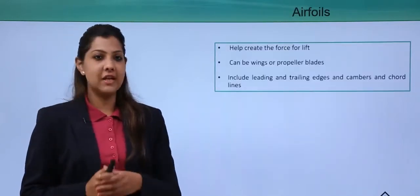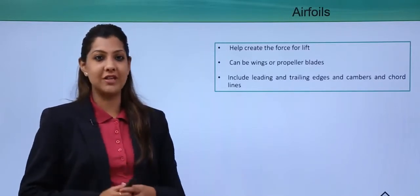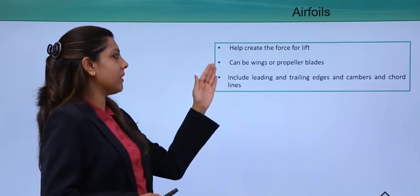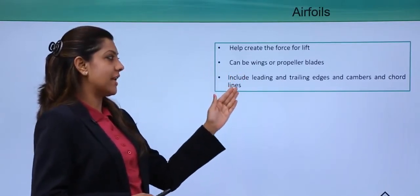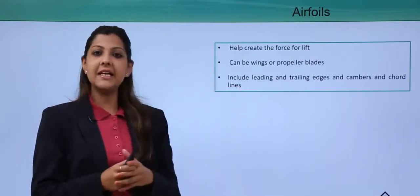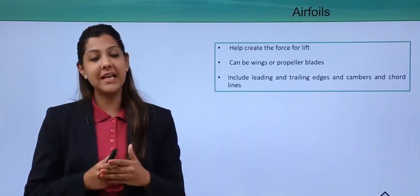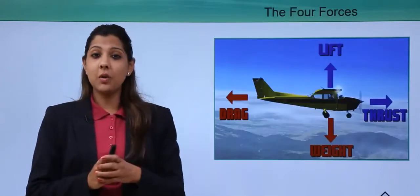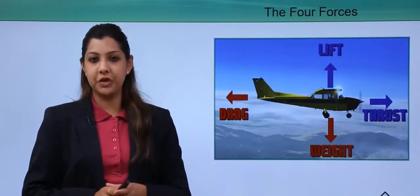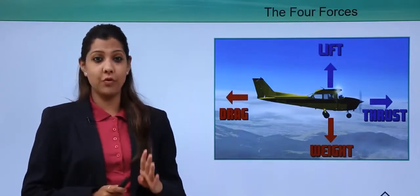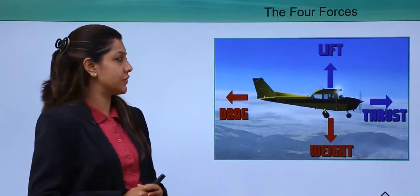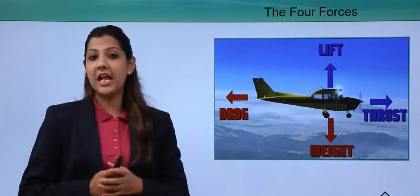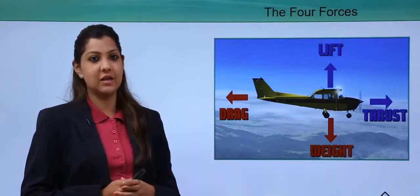Airfoils create the force of lift. They can be wings or propeller blades, and they include leading and trailing edges, cambers, and chord lines. The leading edge is towards the nose of the aircraft and the trailing edge is towards the aft. There are four main forces acting on the aircraft: lift, weight, drag, and thrust — all acting in opposite directions to help the aircraft move, take off, and land.